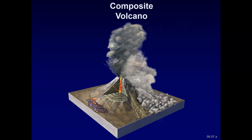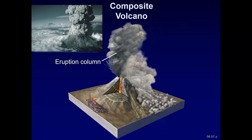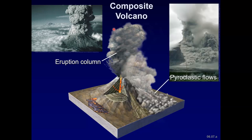We'll start off with a composite volcano. Look at the eruption column. What you have here is tephra and gas rising high into the atmosphere. Tephra settles around the volcano, and the ash can drift long distances.